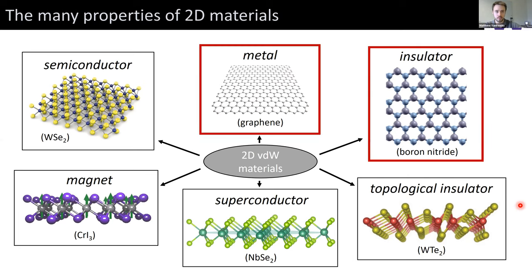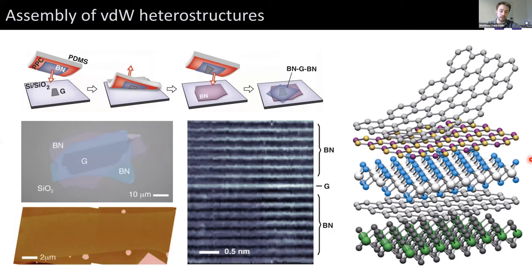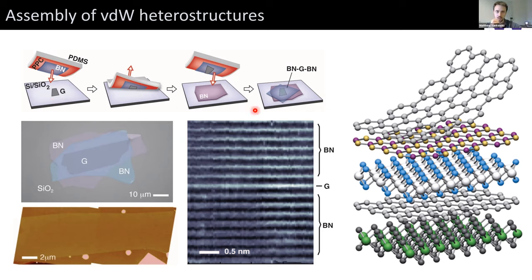The real power of this field came from the development by my postdoc advisor Corey Dean, about a decade ago, of a technique to take isolated van der Waals materials and assemble them into a heterostructure on demand. This is done using a flexible stamp with a polymer on the underside, which you align under an optical microscope above a previously exfoliated flake. You bring them together, heat the substrate, peel away the stamp, and the flake prefers to adhere to the stamp. Repeating this procedure lets you create a structure of various atomically thin crystals. Here's an optical microscope image of a monolayer graphene encapsulated between two thin sheets of boron nitride.